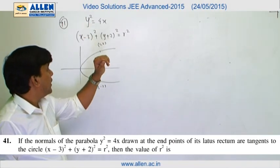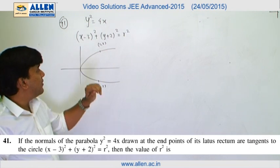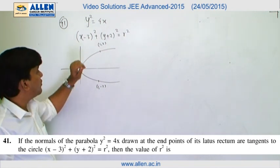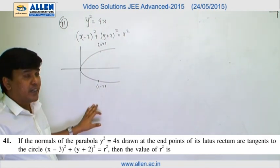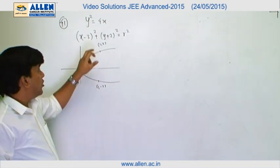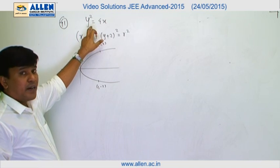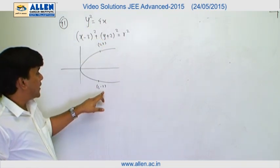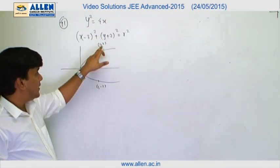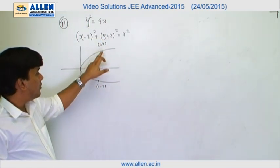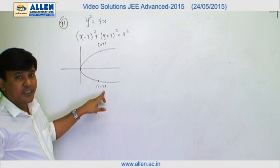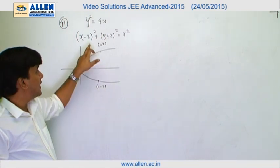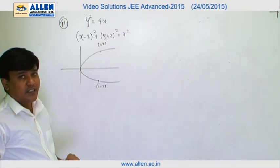In question number 41, a parabola is given: y² = 4x, and there is an equation of a circle. There is a normal to this parabola at the end of the latus rectum, that is the point (1, 2), and this normal is tangent to this circle.